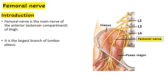Femoral nerve is the main nerve of the anterior compartment of the thigh, which is also known as the extensor compartment of the thigh, because it contains a muscle known as quadriceps femoris which is responsible for extension at the knee. It is the largest branch of the lumbar plexus.